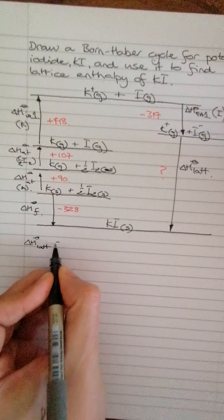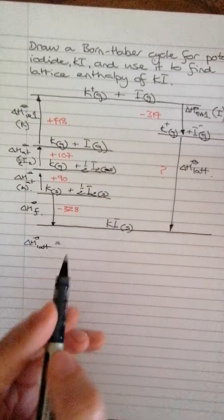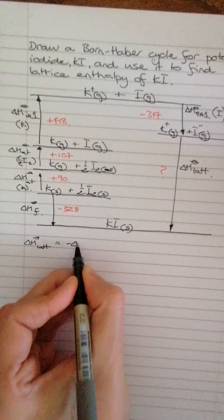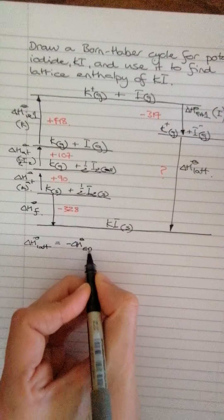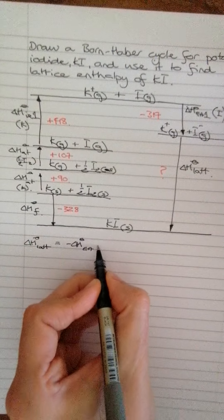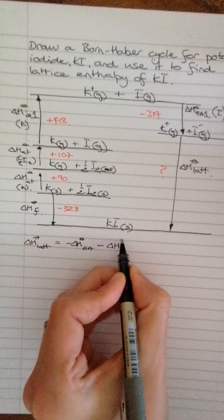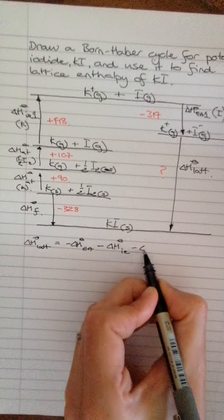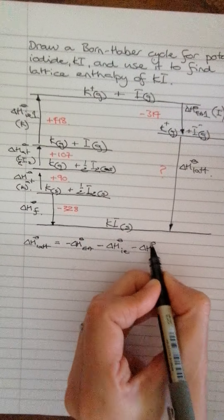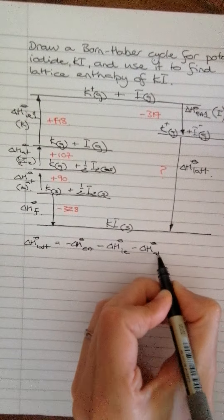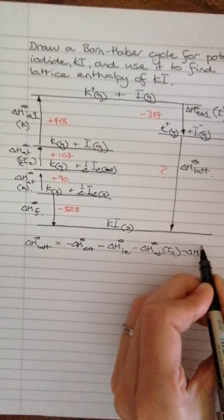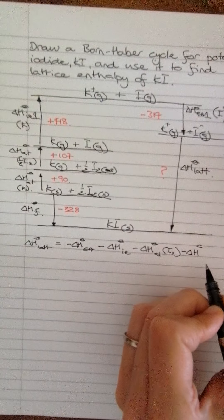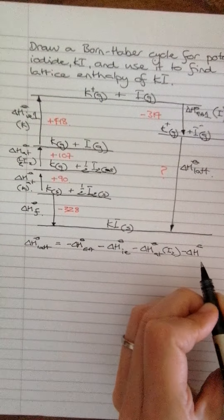So this is just taking a different route to produce exactly the same thing. Okay. So we need, now anytime we go against the arrow, we change the sign. So minus delta H EA. I'll try and abbreviate them, keep it short. Minus, because we're against the arrow again, delta H standard IE minus delta H standard atomization. That one's for iodine. Next one, minus delta H standard atomization for K.